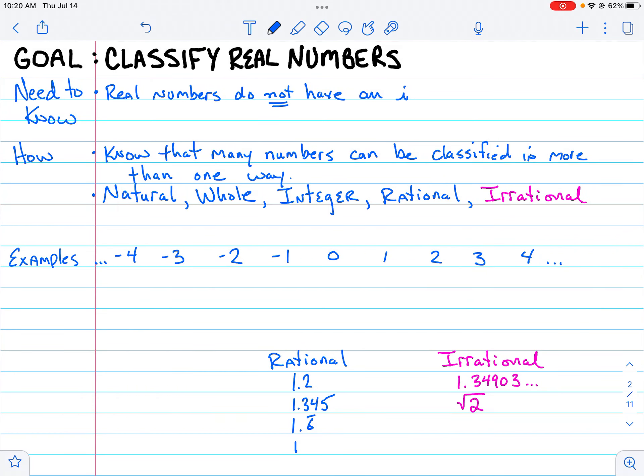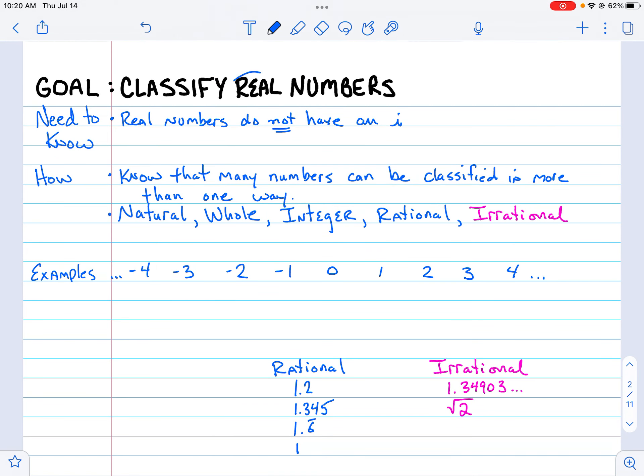You'll often be asked to classify numbers using words to describe them. The first thing you need to know is that when we're dealing with real numbers, these are numbers that do not have the letter i associated with them. Those things that deal with the letter i are called imaginary, and we're not dealing with those.